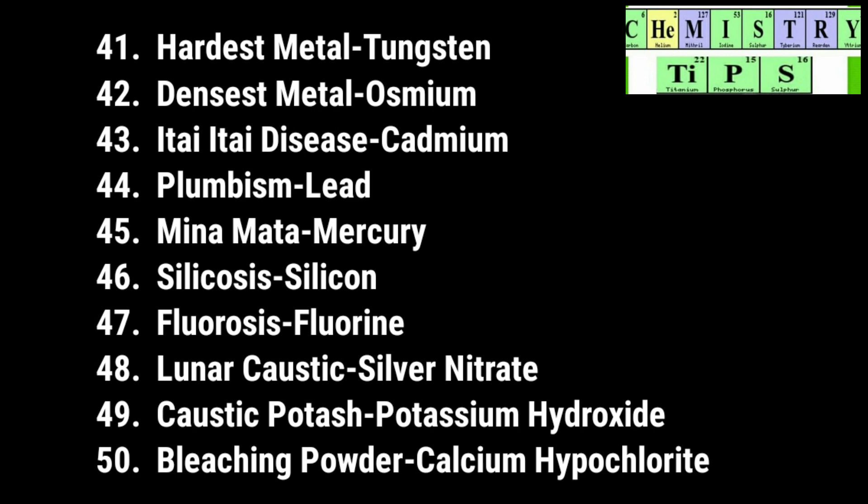Lunar caustic — that is silver nitrate; silver nitrate is also known as lunar caustic. Caustic potash — that is potassium hydroxide. Similarly, caustic soda is the name of sodium hydroxide. Last one: bleaching powder — calcium hypochlorite is known as bleaching powder. This video ends here.